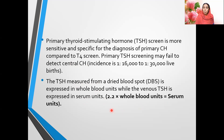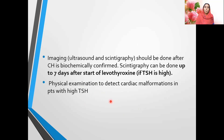The conversion factor is important: 2.2 multiplied by whole blood units gives you serum units. This is really important because results sometimes come in whole blood units, so the conversion factor of 2.2 is critical. Imaging — which includes ultrasonogram and scintigraphy — should be done after congenital hypothyroidism is biochemically confirmed.